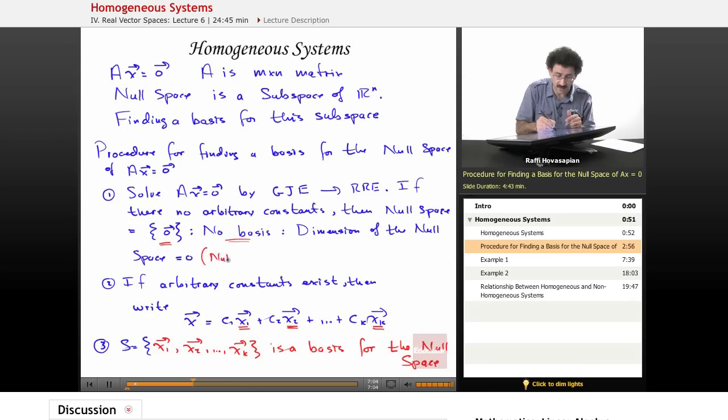and the dimension of the null space, the nullity, in other words, equals zero. Nullity is the dimension of the null space. In other words, it's the number of vectors that span that space. It is zero.